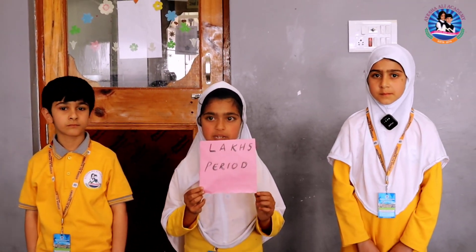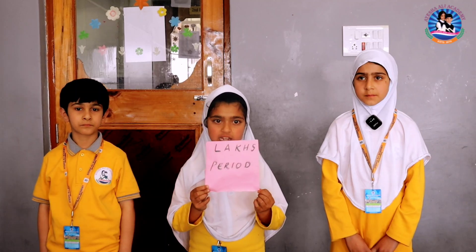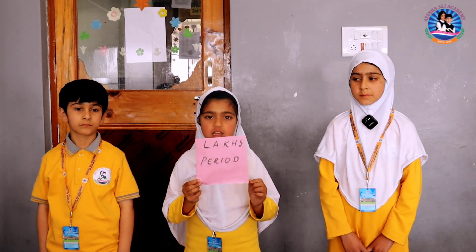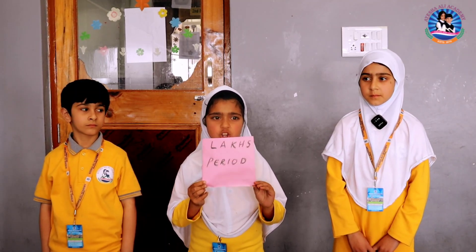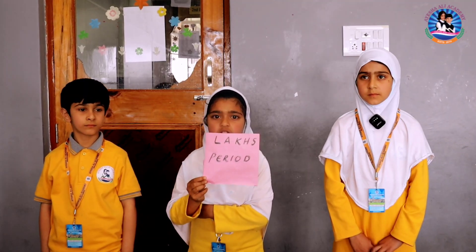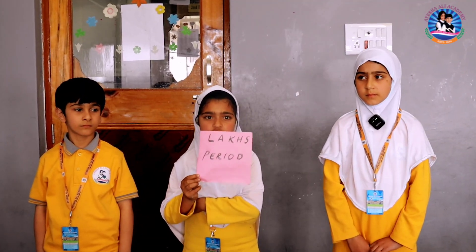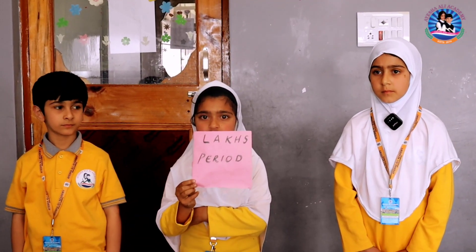In lakh's period, there are two places: lakh's and ten lakh's. The short form of lakh's is L and the short form of ten lakh's is TL.